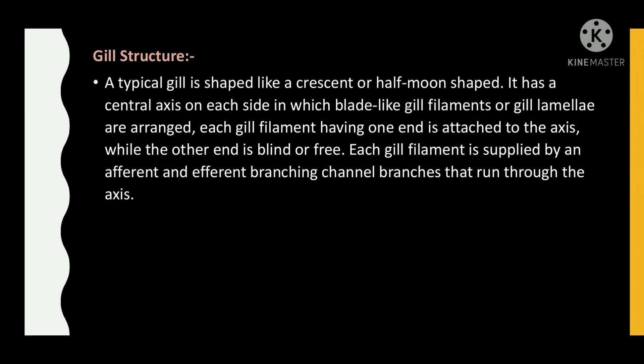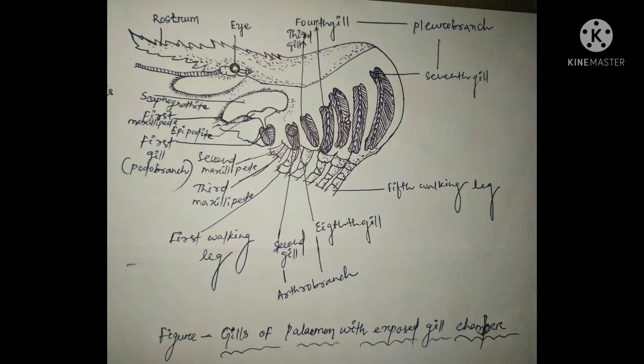The gill is shaped like a crescent or half moon. It has a central axis on each side in which blade-like gill filaments or gill lamellae are arranged. Each gill filament has one end attached to the axis while the other end is blind or free. Each gill filament is supplied by afferent and efferent branching channel branches that run through the axis. This figure shows gills of Palaemon with exposed gill chamber.